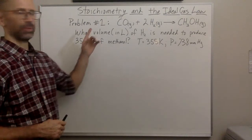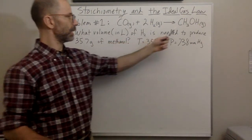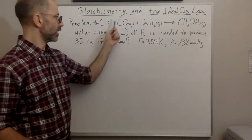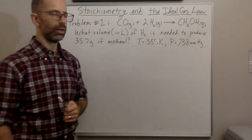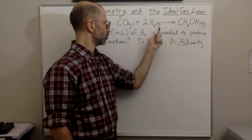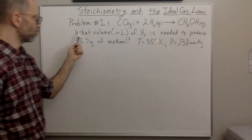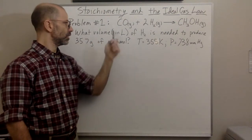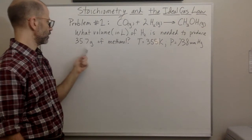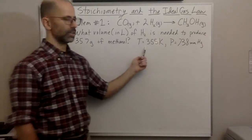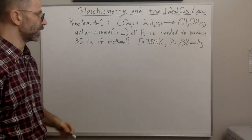In this problem they give me a balanced equation. This equation is the process of making methanol. You are taking carbon monoxide gas, reacting it with hydrogen gas, and that's going to make methanol — CH3OH gas. The question is asking what volume in liters of H2 gas is needed to produce 35.7 grams of methanol. They also give us the temperature and the pressure, which are the conditions under which this reaction is going on.